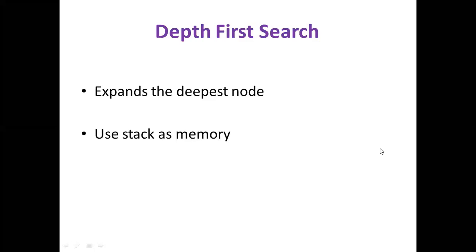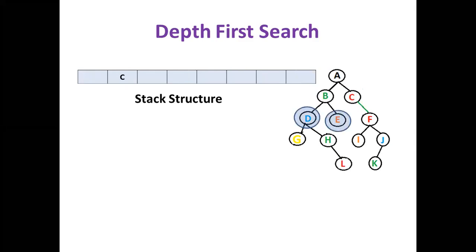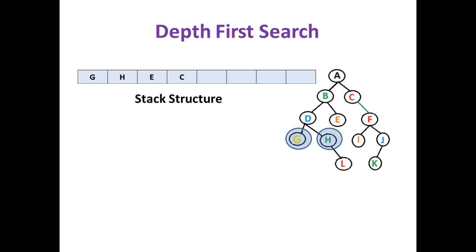Depth first search expands the deepest node first using a stack. Start with the root node, visit it, find its children and add them to the stack. B is popped next; its children D and E are pushed. D is popped; its children G and H are pushed. Each time a node is added it goes to the top, and removal is also from the top. G is popped next — if G is the goal state, stop.